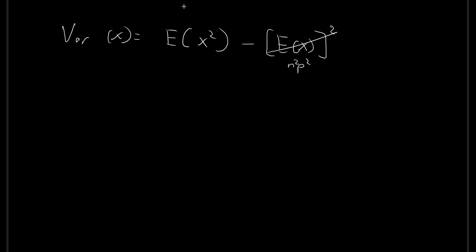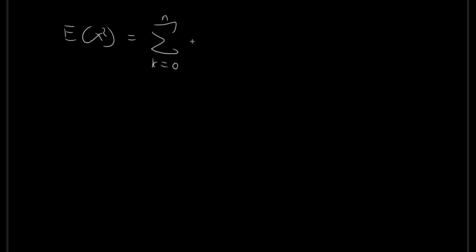So all we have to do is evaluate the expected value of x squared. So the expected value of x squared by first principles is just equal to this expression here. So we have k squared multiplied by the corresponding probability for x for each value of k.